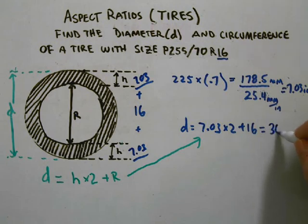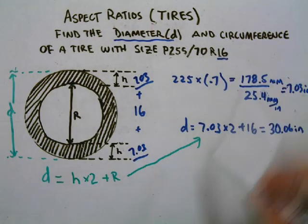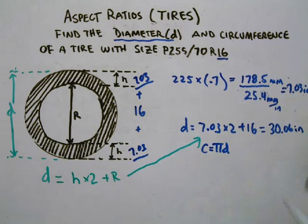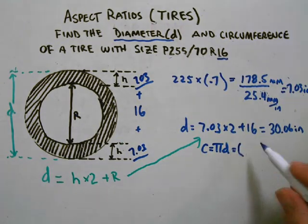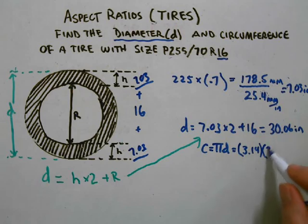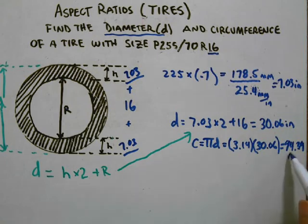Now the circumference also has a formula: C equals π times d. We're going to estimate π to be 3.14 and multiply that times the diameter, which we just figured out to be 30.06. We should end up with 94.388, which rounds to 94.39 inches.